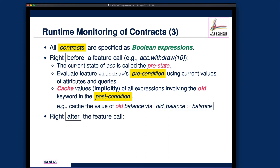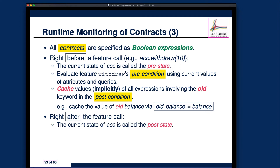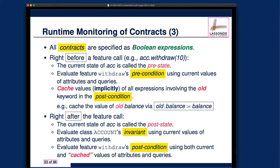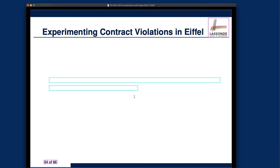After the feature call, we have to check two things: first, we should check the invariants to make sure the resulting object is a valid one as far as the class invariant is concerned, and second, we should check the postcondition. In order to evaluate the postcondition in general, we must make sure the caching process in the pre-states is complete. Let's now go over the diagram.